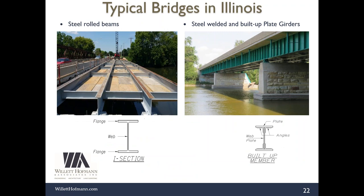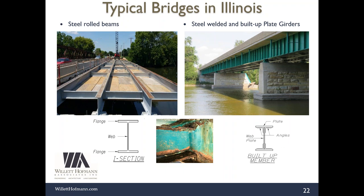Steel bridges are also common, though less so than concrete. The left example is a steel rolled beam bridge using standard I-sections familiar from AISC manuals; the right is an older built-up member or newer plate girder for complex bridges. AASHTOWare can model all elements including shear studs and diaphragms. Similar to concrete bridges, if deterioration is present, you model that in AASHTOWare, re-rate the bridge, and send the updated rating to IDOT.